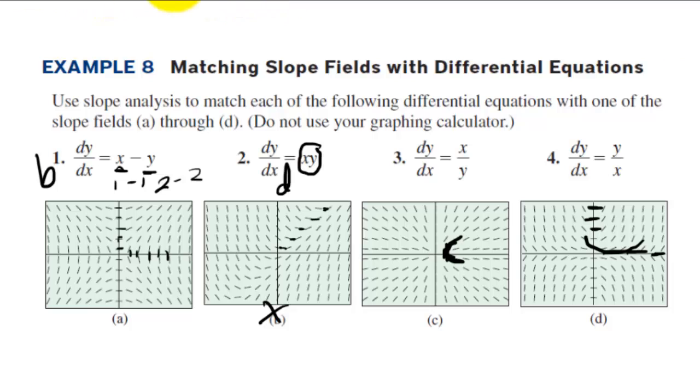On number 3, dy/dx equals x/y, we want undefined slopes when y is 0, and we want slopes of 0 when x is 0. When x is 0, I think this is right here. Remember, when x is 0, we have slopes of 0, and then when y is 0, we have slopes that are undefined. They're going straight up and down, that's undefined slopes. So number 3 should be letter a.